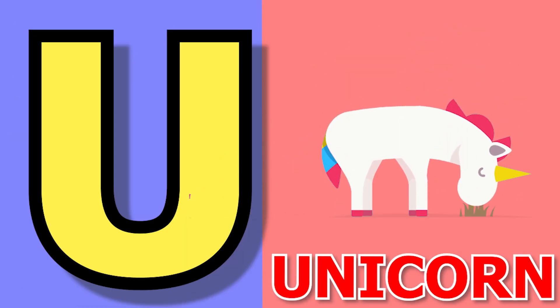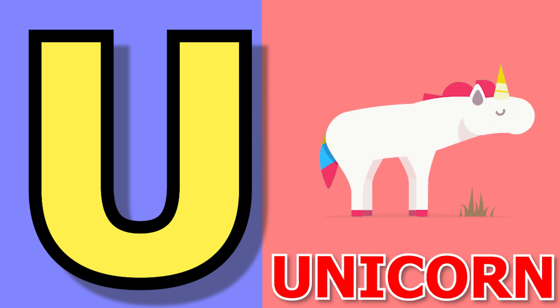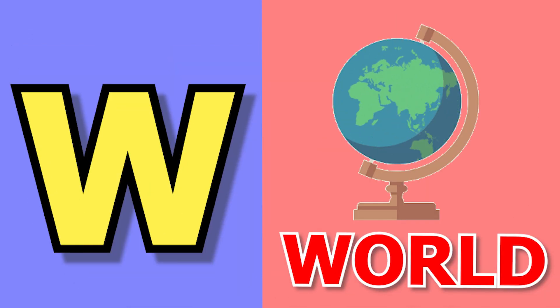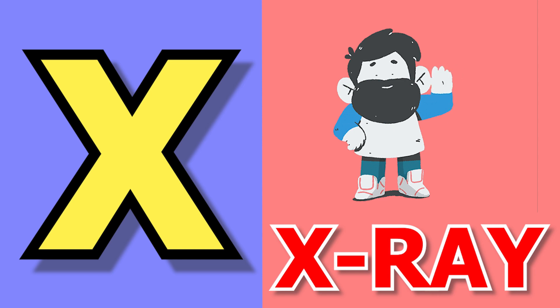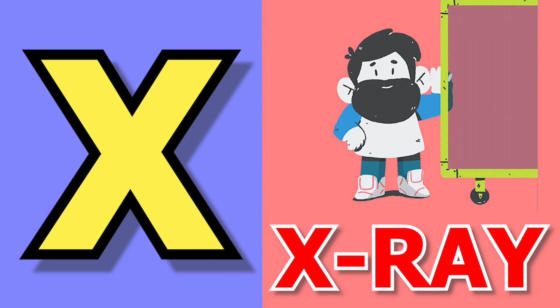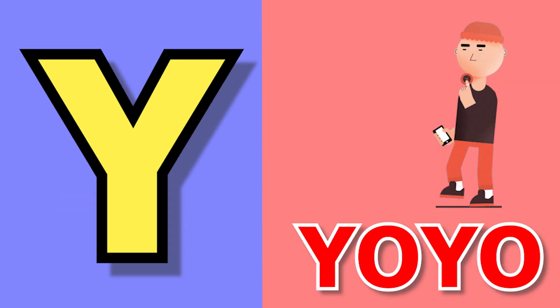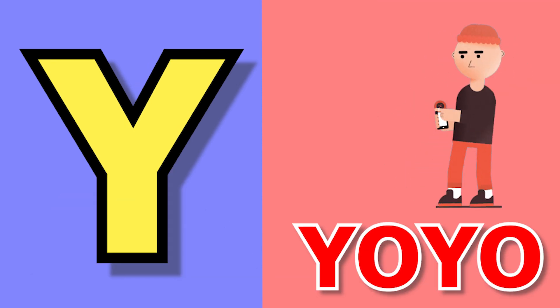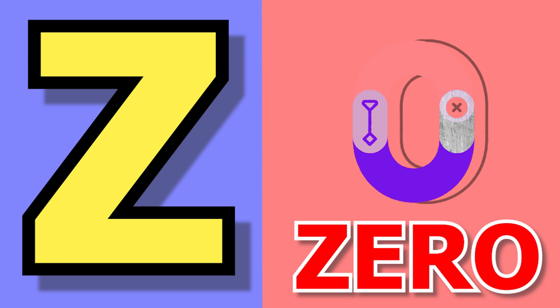U for unicorn, V for vegetable, W for wild, X for x-ray, Y for yo-yo, Z for zero.